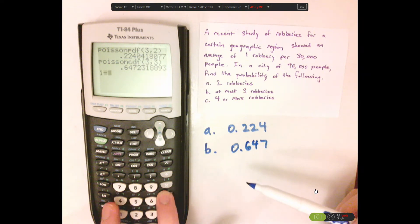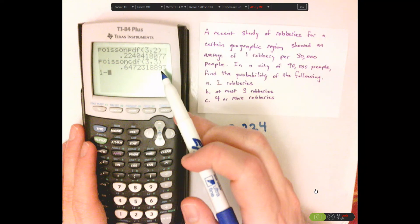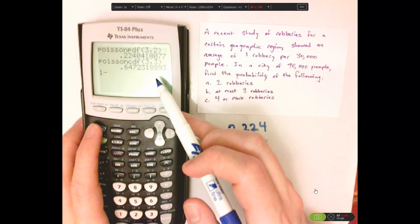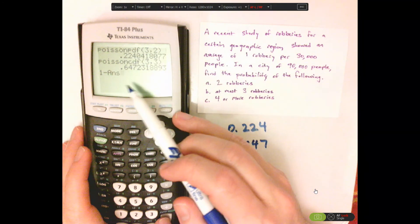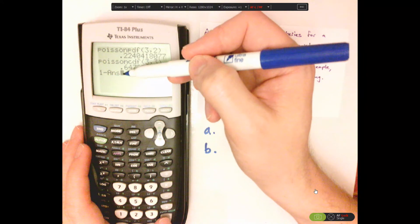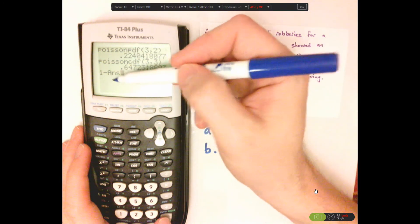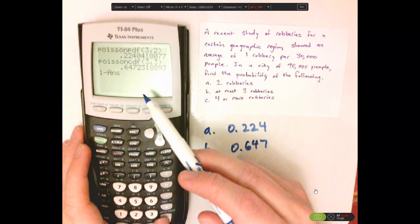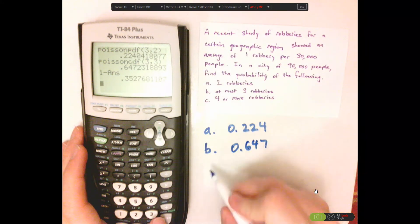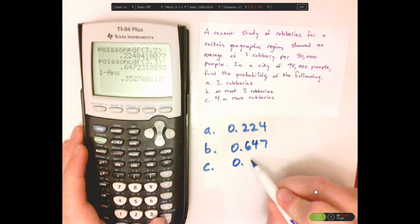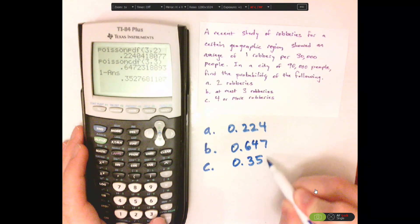So 1 minus, because this is 3, I want the opposite, 4 or more. So basically, I use the complementary rule to get the opposite. So that would be around 3 decimal places, 0.353.